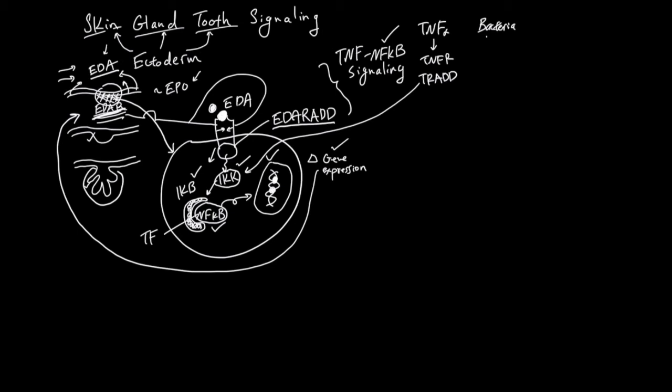Here's another example: bacteria have a special molecule called lipopolysaccharides. A lot of your immune cells have toll-like receptor that can bind to lipopolysaccharide, and the toll-like receptor can also activate IKK.